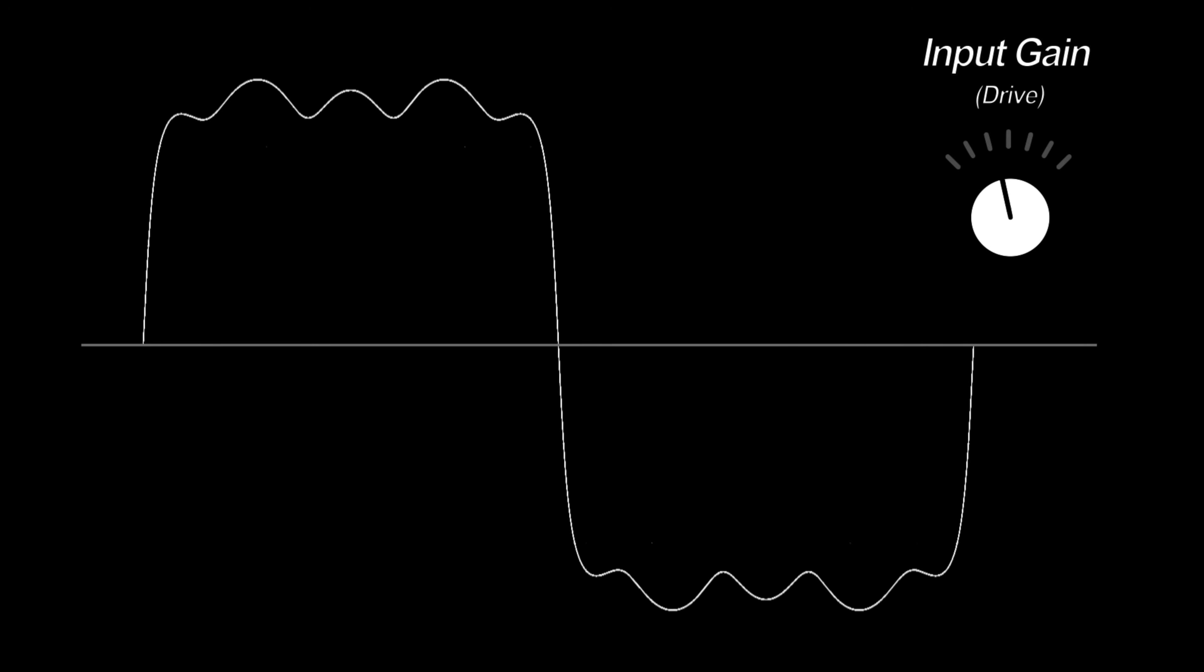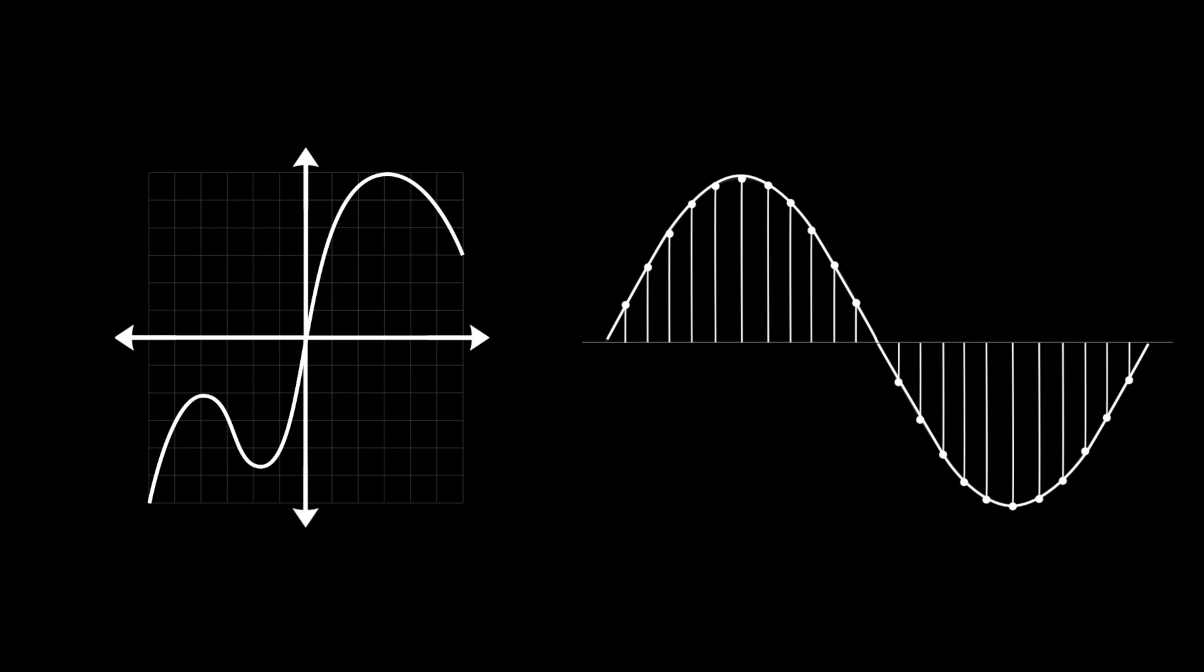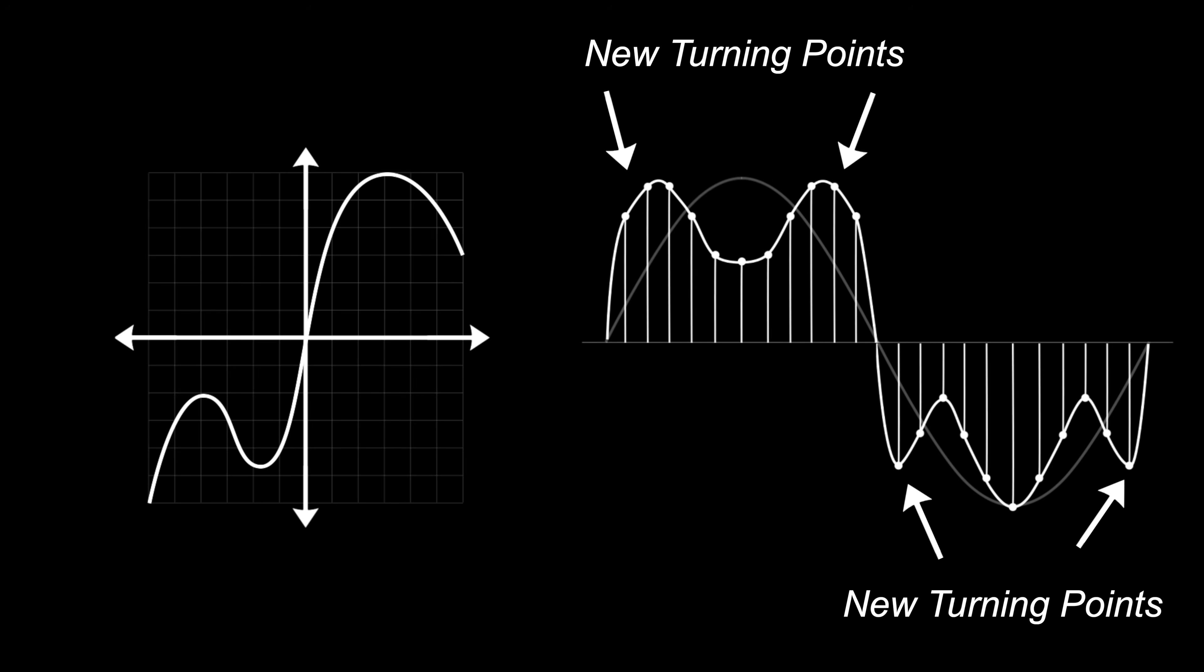Monotonic curves preserve the general shape of a wave and don't add any new turning points, and this allows for smoother distortion. If we use a wave shaper with a non-monotonic shape, the order of all the relative heights on the wave changes and it results in much harsher distortion.